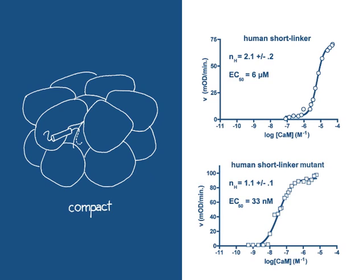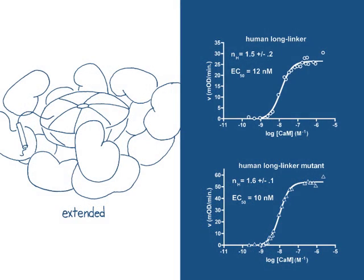We observed that mutation of interactions seen in the crystal structure affect the activation of isoforms with a short linker. Curiously, we noticed that in long linker isoforms, these mutations have no effect.